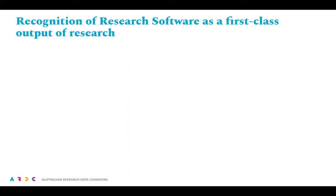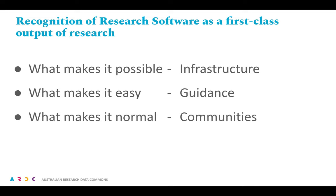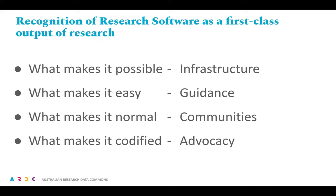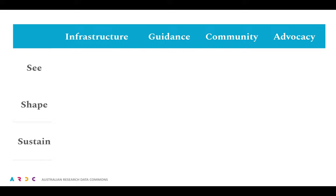Turning to a roadmap to address the call to see, shape and sustain research software, and ultimately the actions of the agenda, we must consider for each: what makes the change possible, what makes these easy, what makes them normal, and what makes them codified? For those familiar with it, this is a variant of the Centre for Open Science Strategy for Culture Change. Guidance here includes relevant materials and assistance. Advocacy here is shorthand for both advocacy and adoption of both policy and incentive structures. The agenda is a set of 12 actions organized in a grid of three layers and four columns, and a mapping of those 12 actions to relevant stakeholder segments across the nation, not just the ARDC.